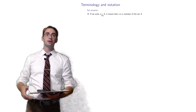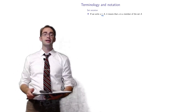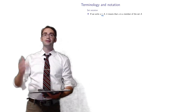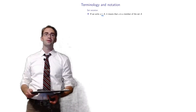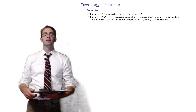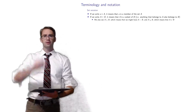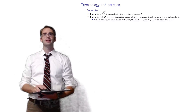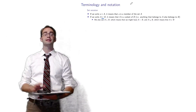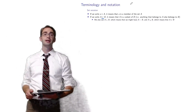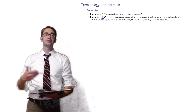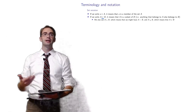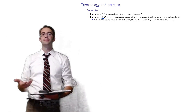For example, you are a student — you're a member of the class of ISE 331. If you write a sideways U — A and then a U and then a B — it means A is a subset of B. In other words, anything that belongs to A also belongs to B.